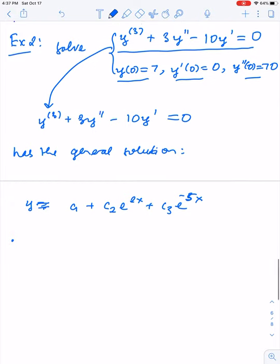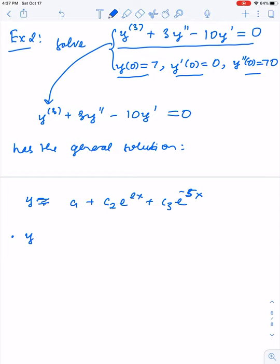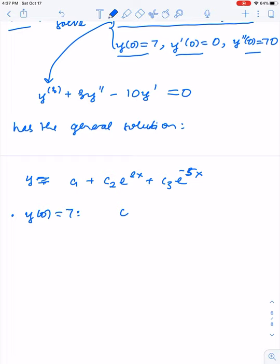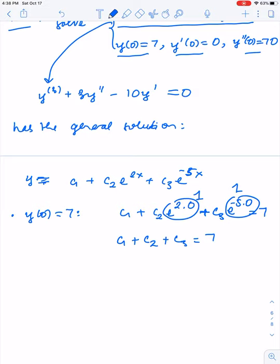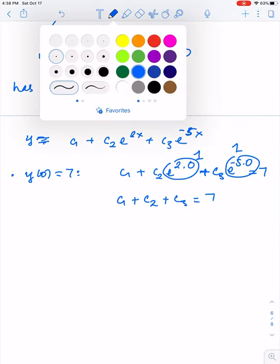Look at the first initial condition y(0) = 7. We plug in: c1 + c2*e^(2*0) + c3*e^(-5*0) = 7, which means c1 + c2 + c3 = 7, because e^0 = 1 in both terms. So we got one equation.